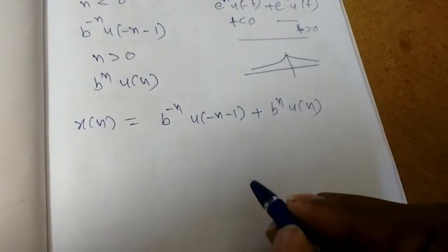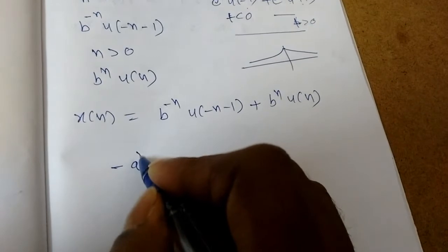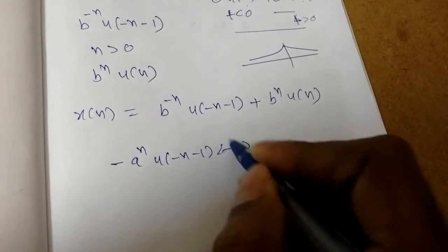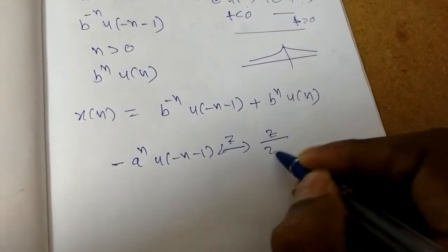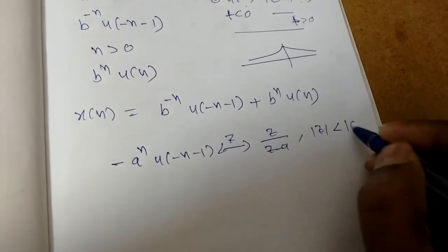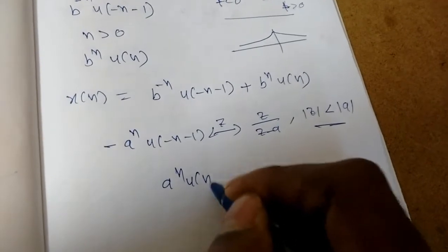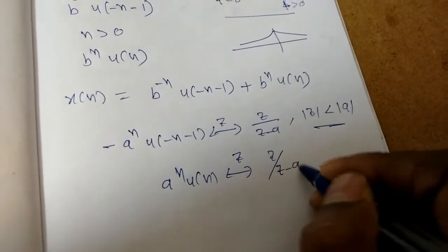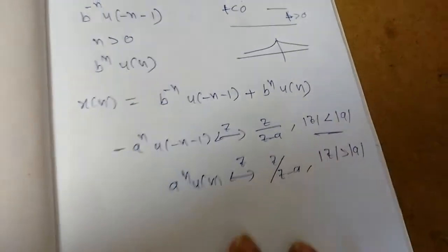We know that if minus a power n times u of minus n minus 1 is there, the Z transform is Z by Z minus a, with ROC mod z less than mod a. And if a power n times u of n is there, the Z transform is Z by Z minus a, with region of convergence mod z greater than mod a.